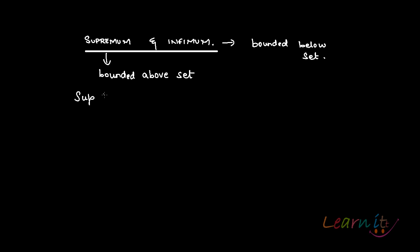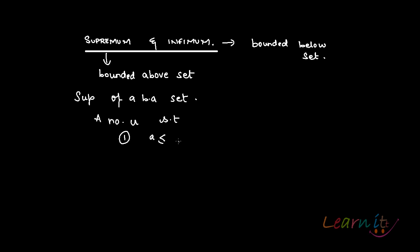Supremum, written as sup of a bounded above set, is essentially a number u such that it satisfies the following two conditions. Number one: a is less than or equal to u for all a belonging to set A. This means that u is an upper bound.